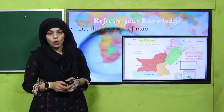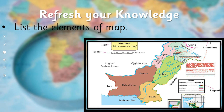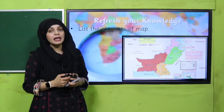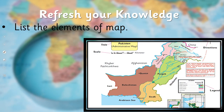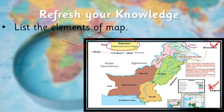Now it is time to refresh your knowledge. List the elements of the map. You can see a map and you need to list its different elements. Number one is the border, then comes the orientation or directions, then comes the legend, then comes the title, and after that the scale. These are the different elements of the map, also called BOLTS — B for border, O for orientation, L for legend, T for title, and S for scale.